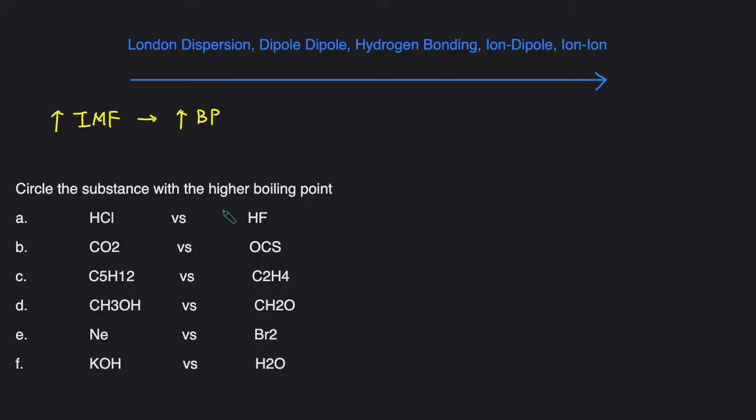So in A we have HCl versus HF. We're first going to determine the primary intermolecular forces that are present in each molecule and then we'll determine which one has stronger IMF and that's the one that's going to have a higher boiling point. So HCl is polar so its primary IMF is dipole-dipole. HF is going to have hydrogen bonding because remember hydrogen bonding is HF, HO, or HN. So this is H bond and we know that hydrogen bonding is stronger than dipole-dipole. So since this has a stronger intermolecular force it will have a higher boiling point.